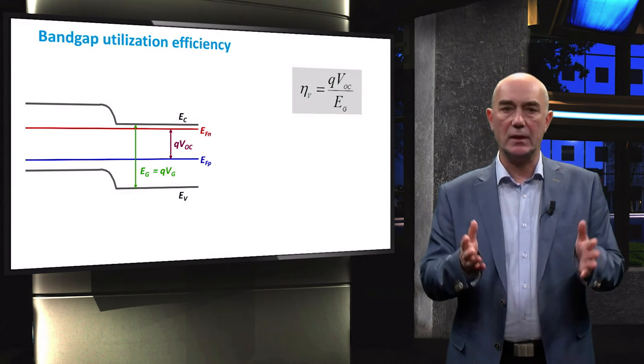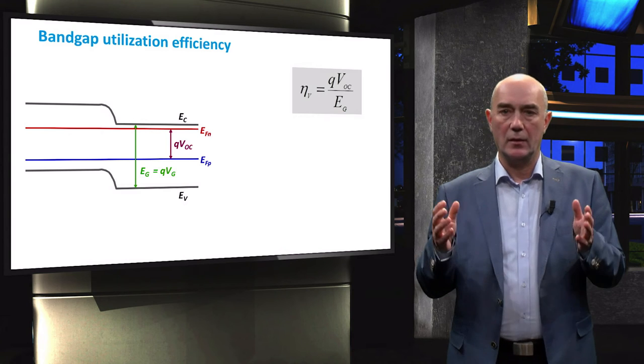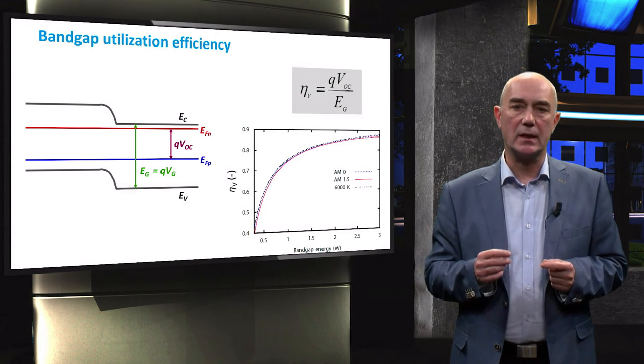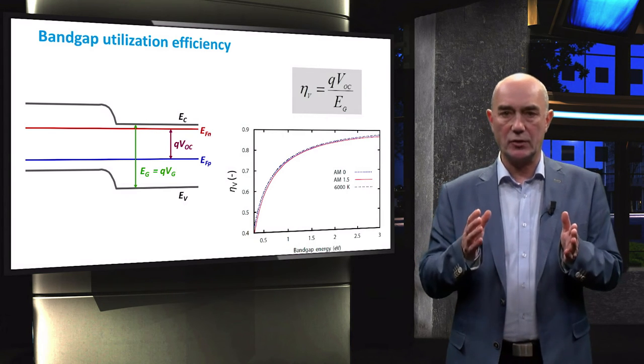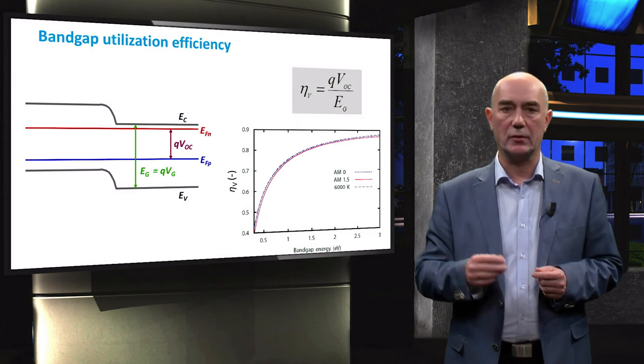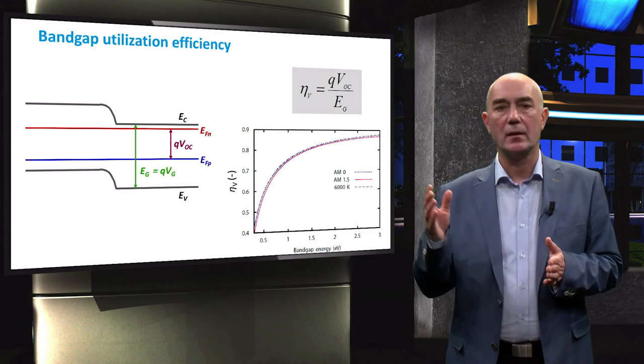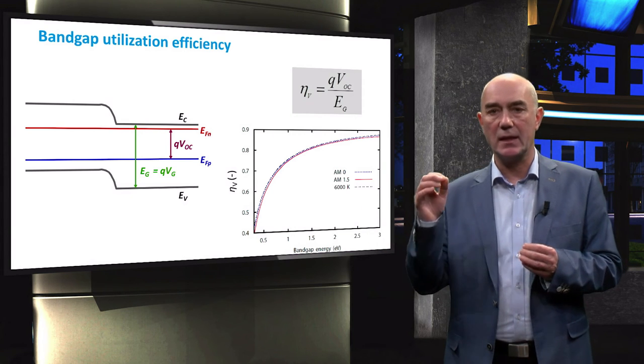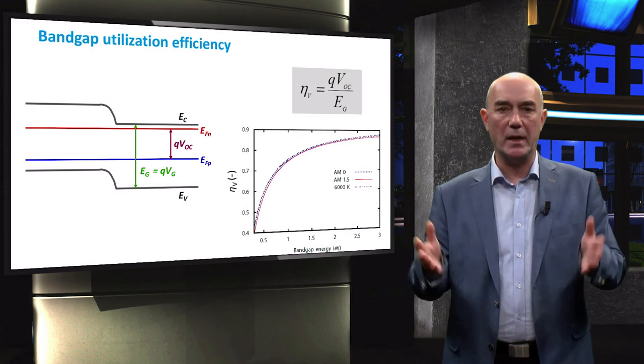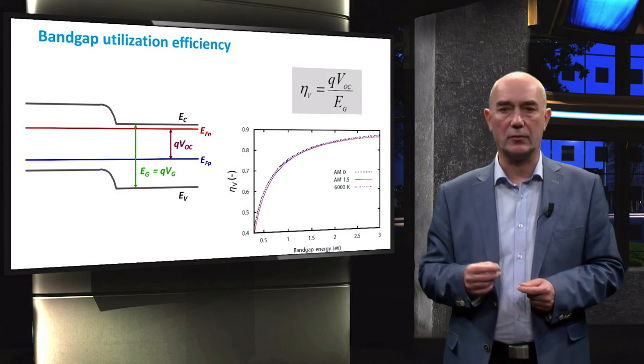Using the equation for VOC and J0, we can plot the band gap utilization efficiency as a function of the band gap energy of a solar cell absorber. From the plot on the left, we can see that eta V is around 75% for a band gap of 1.2 eV.